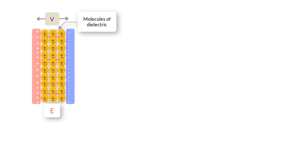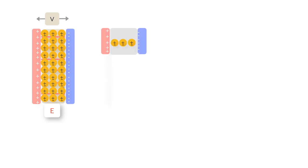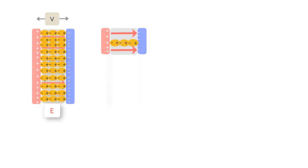Let us understand what is happening in the dielectric at a molecular level when it is placed between capacitor plates. Dielectrics are non-conductors and do not have free charges or electrons to move around and redistribute. When the dielectric is placed in the electric field E of the capacitor, the molecules start behaving like dipoles — the electric field pushes the electrons of the molecules in one direction and the positive charge in the other, such that the molecule orients itself as a dipole. We call such molecules induced dipoles.